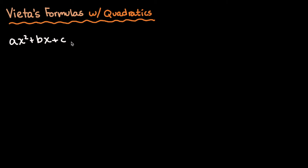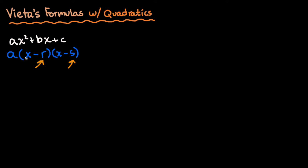Vieta's formulas are related to the roots of a certain polynomial. Let's take ax squared plus bx plus c. We can write this as a times (x minus r) times (x minus s), where r and s are the roots of the polynomial. Any polynomial can be expressed as a product of binomials containing its roots, with the leading coefficient on the outside.